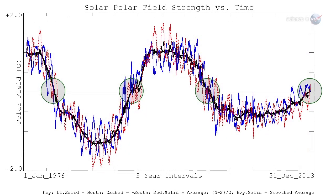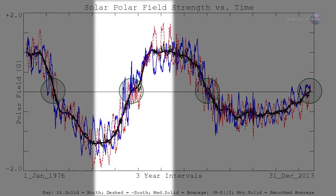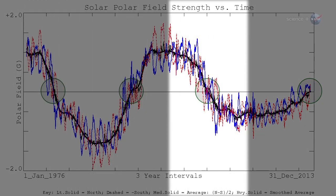Magnetograms at Wilcox have been tracking the Sun's polar magnetism since 1976, and they have recorded three grand reversals, with a fourth in the offing.